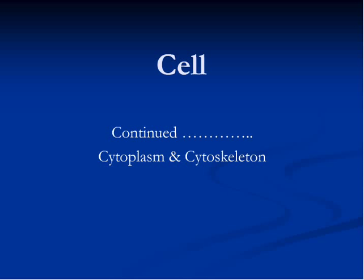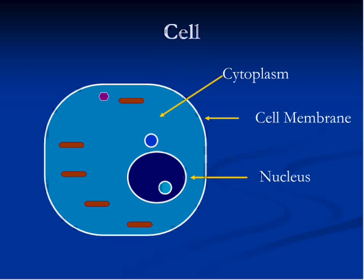We will continue our discussion about cell. We will discuss cytoplasm and cytoskeleton and we will also discuss nucleus. Cytoplasm is a jelly-like structure that fills the space between cell membrane and nucleus, and all organelles lie within cytoplasm.